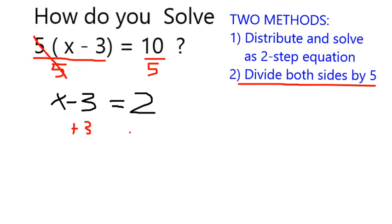And once I do that, on the left-hand side, it's going to cancel. And that's just going to leave me with x as the minus 3 and the plus 3 cancel. And on the right-hand side, I get 2 plus 3, which is 5.